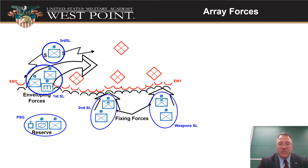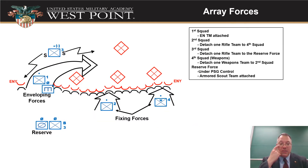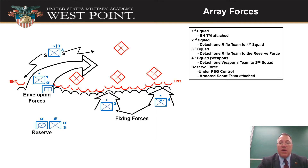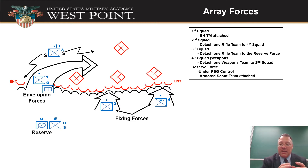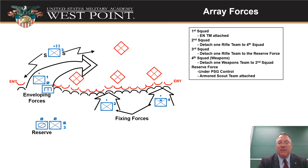Now I consolidate the map showing squads with squad leaders in charge. In the top right I've written out the task organization: first squad with engineer team attached; second squad, detach one rifle team to fourth squad; third squad, detach a rifle team to serve in the reserve; fourth squad (weapons), detach one weapons team to second squad. The reserve force is under the platoon sergeant's control with the armored scout team attached. That's my task organization — all forces arrayed with leadership assigned.